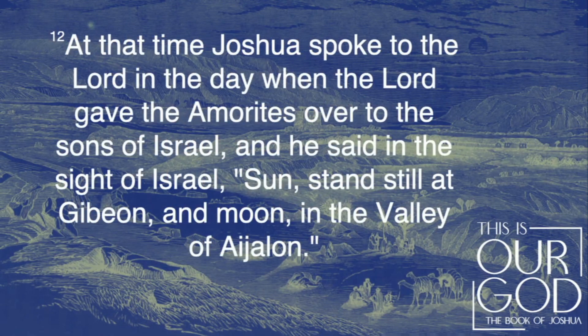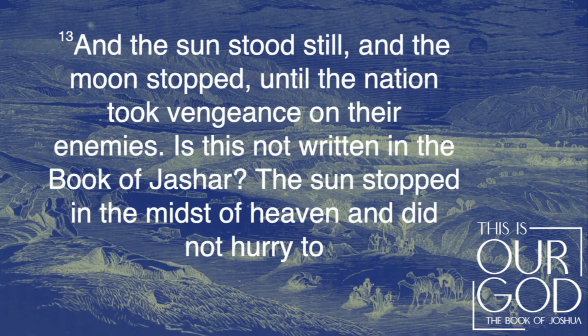At that time, Joshua spoke to the Lord in the day when the Lord gave the Amorites over to the sons of Israel. And he said in the sight of Israel, sun stands still at Gibeon and moon in the valley of Ejelon. And the sun stood still on the moon stopped until the nation took vengeance on their enemies.